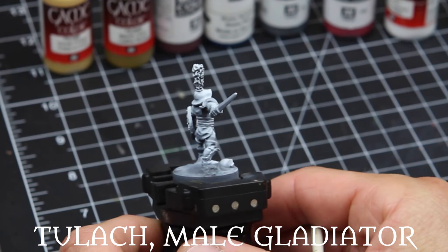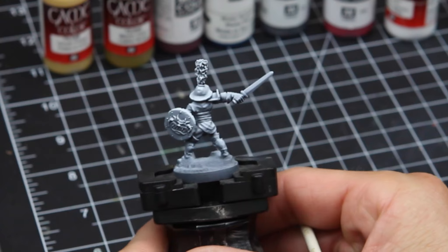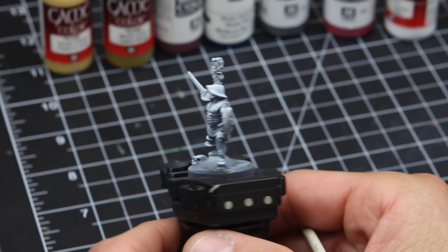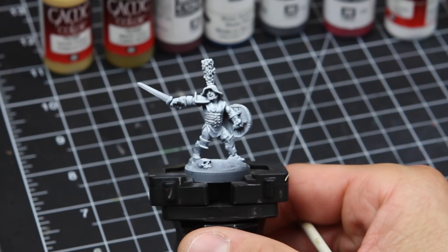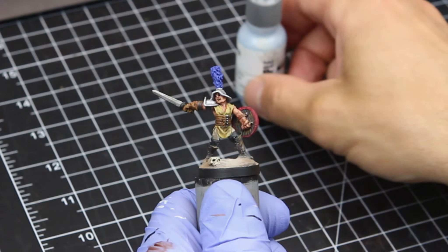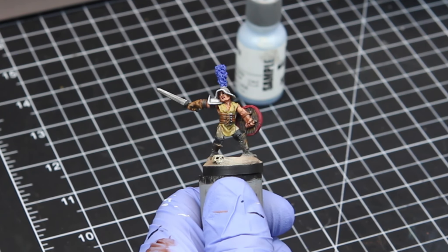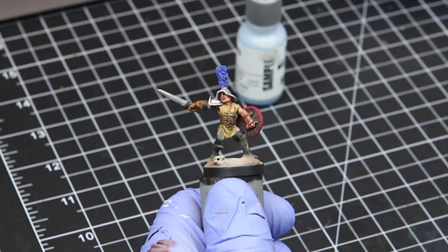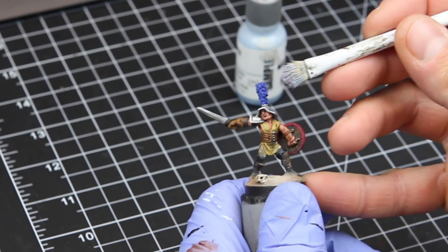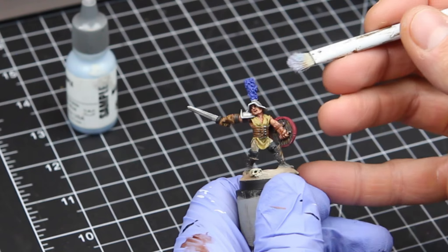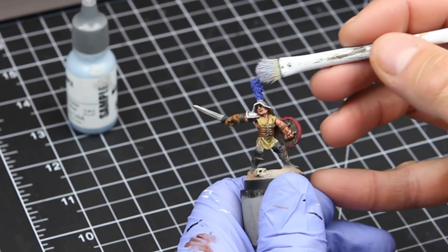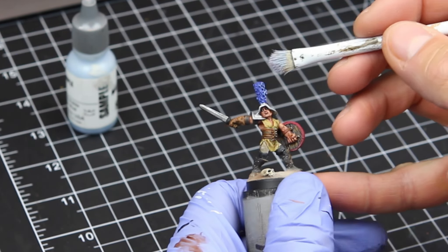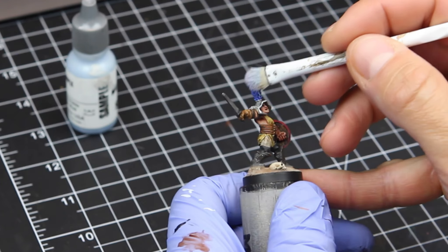All right, on this miniature, we're going to work on a technique that most everybody's familiar with, but I didn't want to leave it out, and that is dry brushing. So I base-coated the plume on the helmet here in an ultramarine color. And I'm using this kind of like a sky blue. It didn't have a name on it. It was a sample from Reaper. But I'm using that to dry brush the plume.